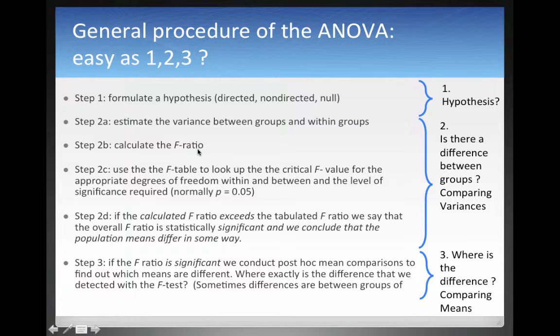And then with this F-ratio we need to figure out, depending on our degrees of freedom, how many groups do we have, how many people do we have in our sample, we can learn how likely it is to get such an F-ratio. What's the probability of getting this F-ratio? And thus we learn if our F-ratio is statistically significant.